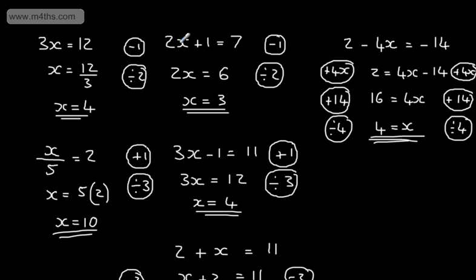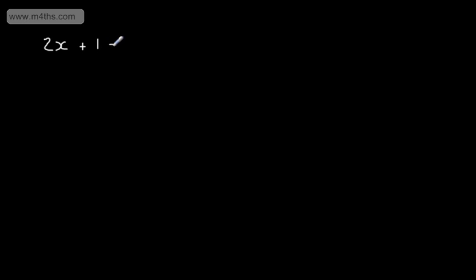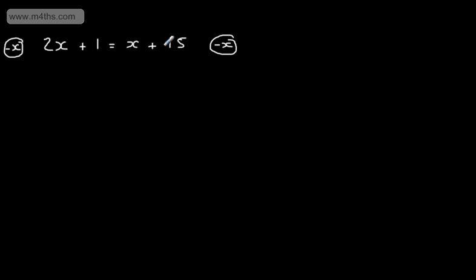The reason I've taken this approach is for when we have an unknown on both sides. Let's look at an example: 2x plus 1 is equal to x plus 15. This time we've got an x on both sides. What I'm going to do is look at the side with the most x's — this side has 2x, that side has 1x. I'm going to subtract an x from both sides. This method is called balancing an equation. Taking x off both sides, 2x minus x gives me 1x.